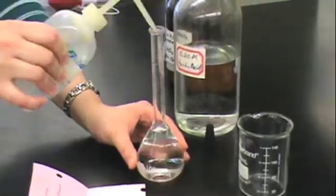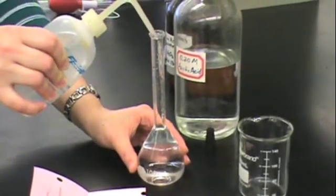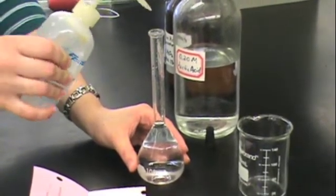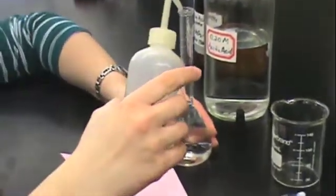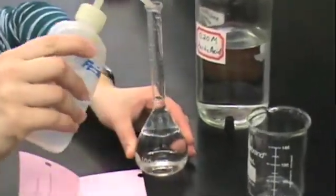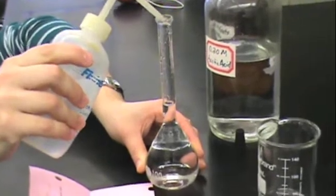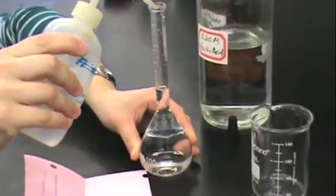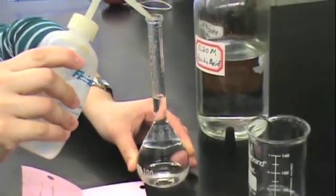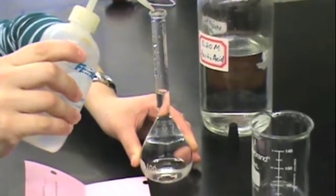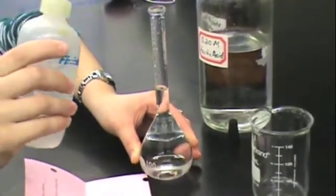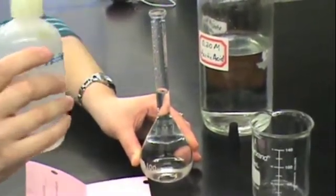You can add water quickly until you get to the neck. Once you get to the neck, you should slow down and get to eye level so you can see the meniscus, and then add water until the meniscus just touches the top of the line. If you overfill, you will need to prepare the solution again, so be very careful when adding those final few drops.